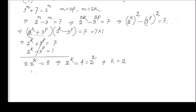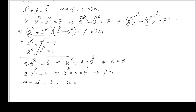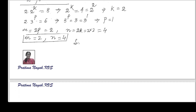Subtracting the two equations: 2 times 3 raised to the power p equals 6, so 3 raised to the power p equals 3, which is 3 raised to the power 1, giving p equals 1. Therefore k equals 2, and since n equals 2k, n equals 4. And since m equals 2p, m equals 2 times 1, so m equals 2. The solution is m equals 2 and n equals 4.